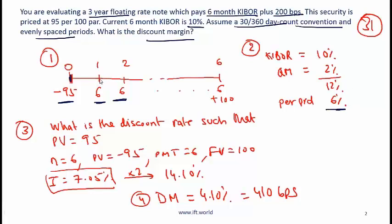So per period the payment is 6% of 100, that's what gives us 6. So the payment is 6 all the way through till the end of year 3 and then the par value of 100 is returned.